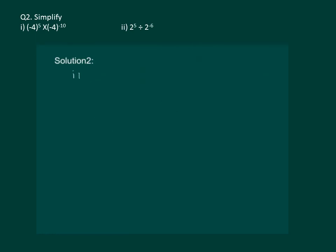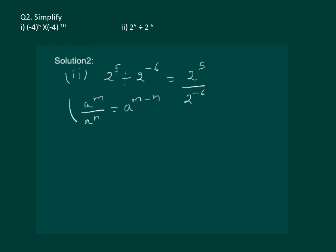Let us start with the second part of example 2, which is 2 to the power of 5 divided by 2 to the power of minus 6. This is similar to our identity: a to the power of m divided by a to the power of n is equal to a power of m minus n. Applying this identity we will get 2 to the power of 5 minus of minus 6, which is equal to 2 to the power of 5 plus 6, which is equal to 2 to the power of 11.